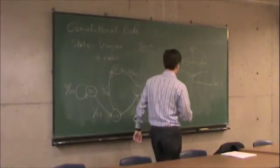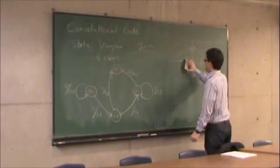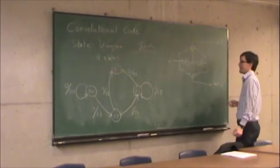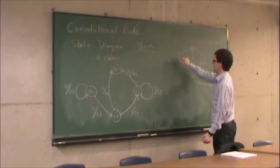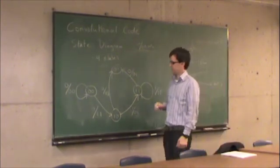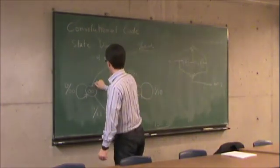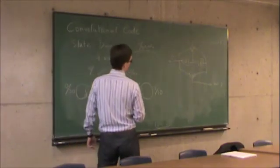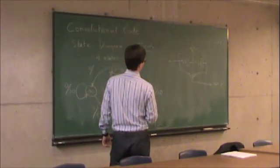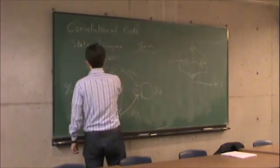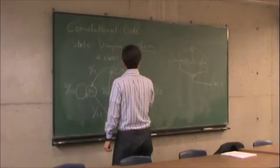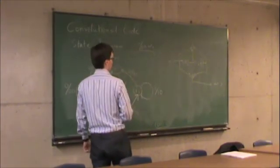Finally, if my state is 01, I can go to 00 or 10. I go to 00 on input 0, in which case my outputs are 1, 1. And I go to 10 on input 1, in which case my outputs are 0, 0.